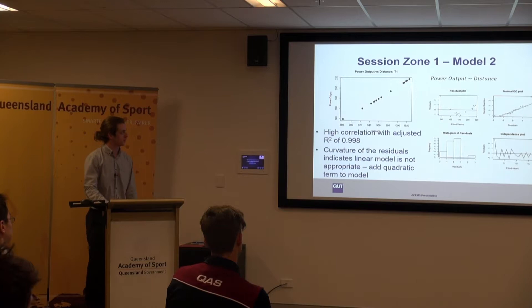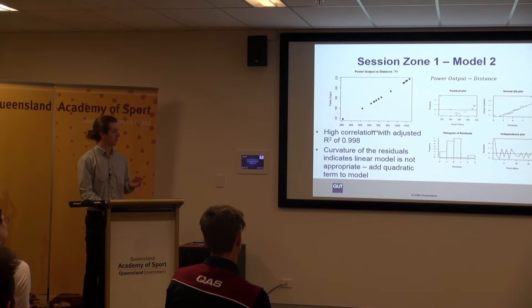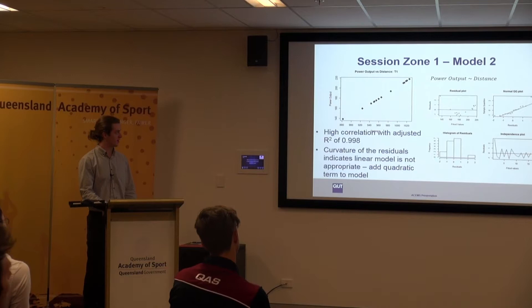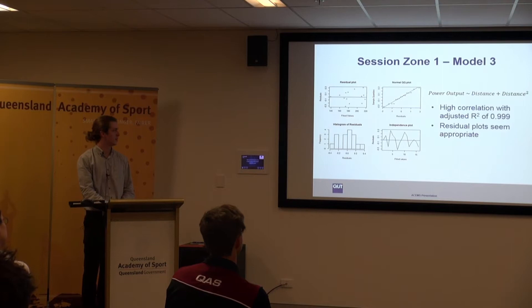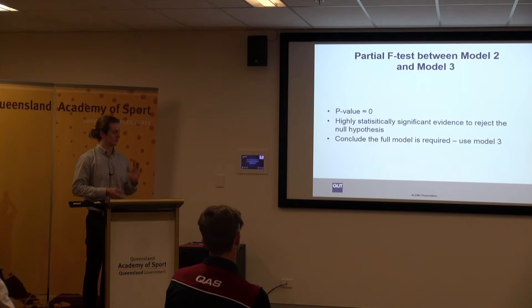For session zone 1, a scatter plot of power output against distance looked quite linear, so I tried power output described simply by distance. This gave a very high adjusted R² of 0.998, but there was curvature in the residuals. Adding a distance-squared term fixed the residuals and pushed R² up to 0.999. A partial F test between the two models confirmed the full model was required, as the additional variation explained was significant, so I used that quadratic model for session zone 1.